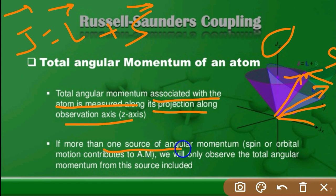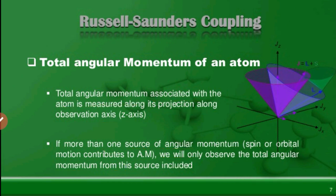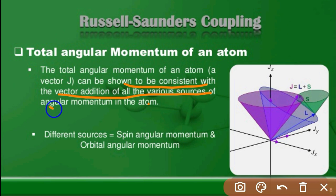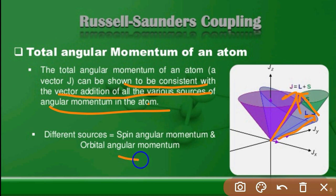If there is more than one source of angular momentum, we will only observe the total angular momentum from all sources included. The total angular momentum of an atom can be shown to be consistent with the vector addition of all various sources of angular momentum in the atom. So simply: L, S, and J.